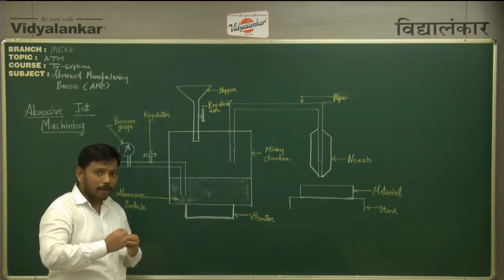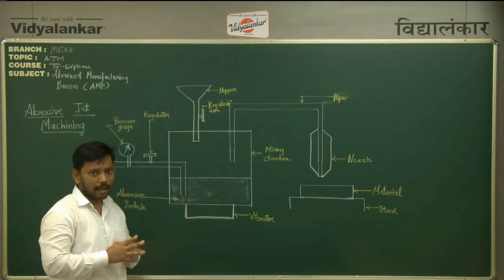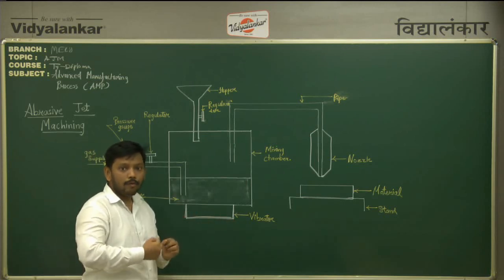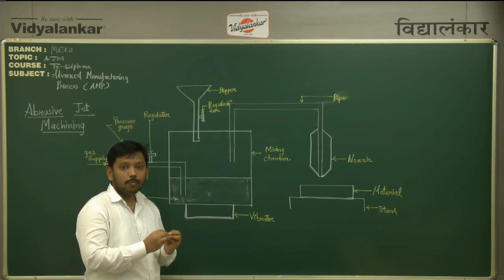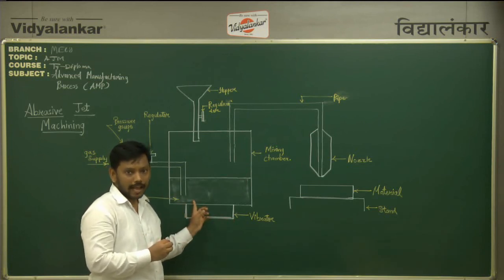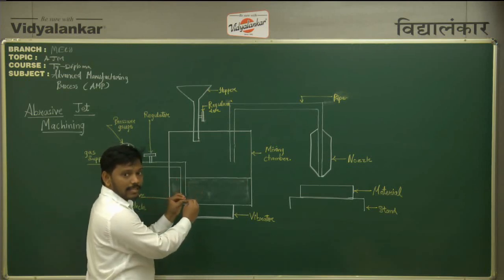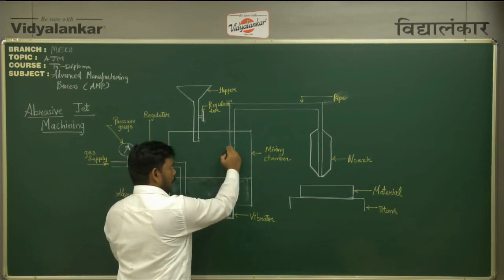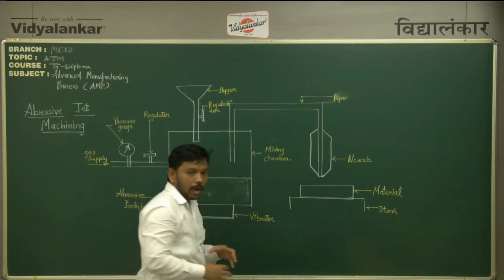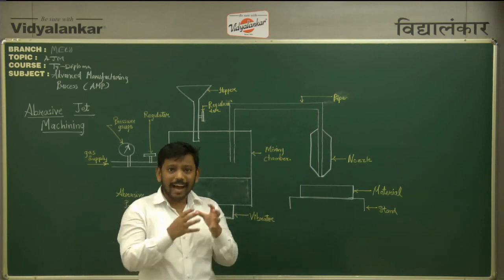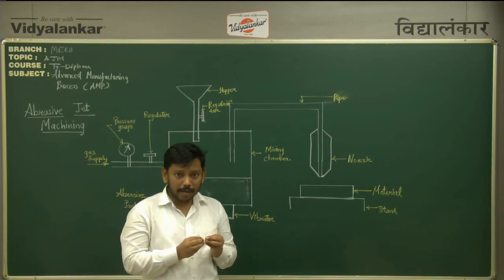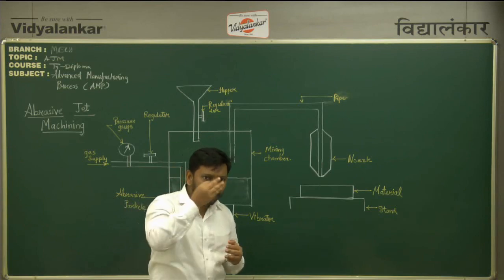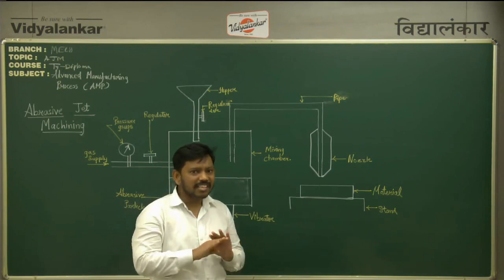Once the gas starts entering, it gets mixed with the abrasive particles, creating a mixture of abrasive particles and high pressurized gas. In order to increase the amount of abrasive particles in the gas supply, we use a vibrator. As we increase the amplitude of the vibrator, more and more abrasive particles get mixed with the gases. This mixture is then taken out through the outer pipe directly connected to the nozzle, where the high pressure energy of gas and abrasive particles gets converted into kinetic energy.